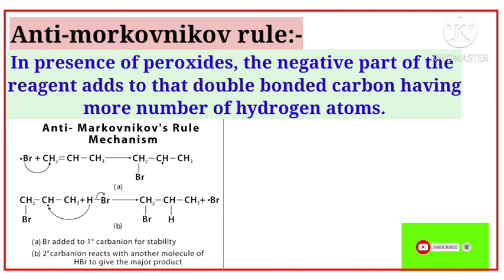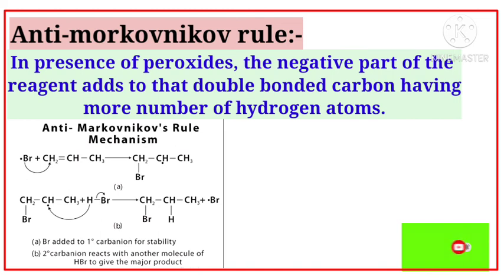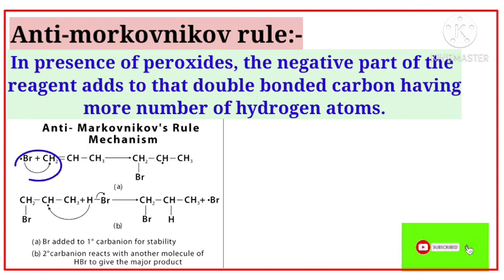In anti-Markovnikov rule, in the presence of peroxide the negative part of the reagent adds to the double-bonded carbon having more number of hydrogen atoms. So the bromine atom attaches to that carbon, making 1-bromopropane the major product and 2-bromopropane the minor product. This is anti-Markovnikov rule.